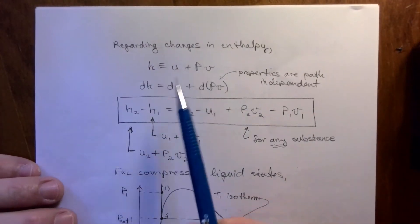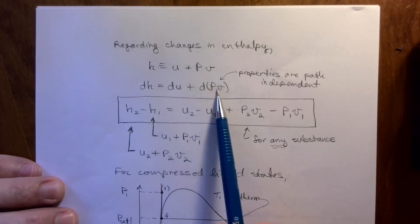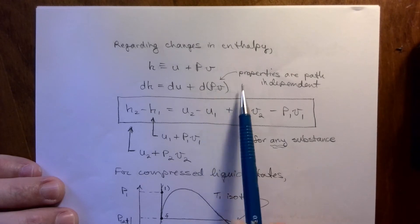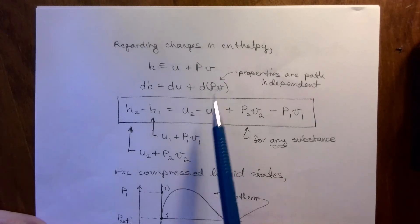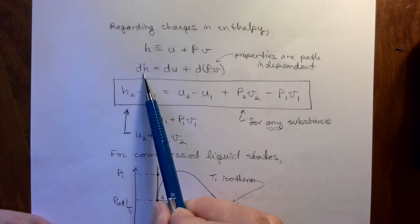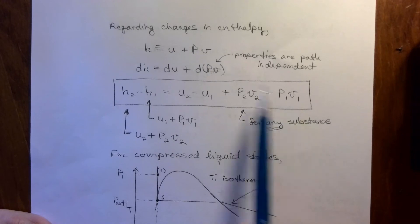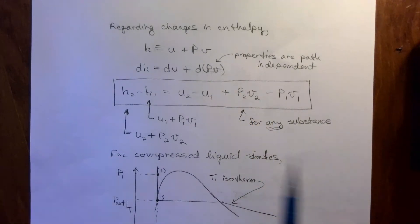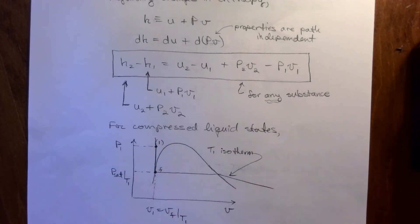Now for enthalpy changes: H equals U plus PV, so dH equals dU plus the derivative of PV. Using the product rule — or since these are properties (not path-dependent), it's straightforward to integrate. H2 minus H1 on the left side; U2 minus U1 after integrating the first term; P2V2 minus P1V1 after integrating the second. By the definition of H we can substitute directly and have that expression.